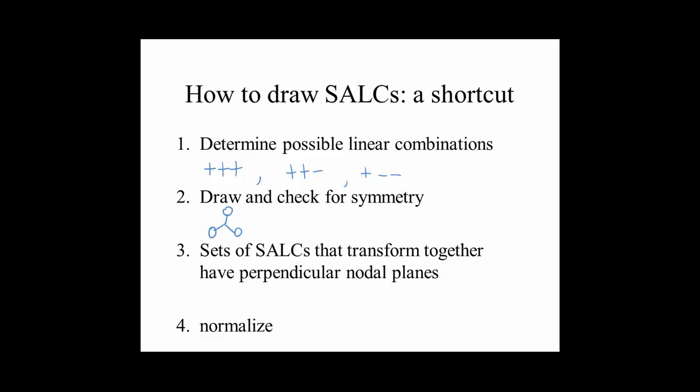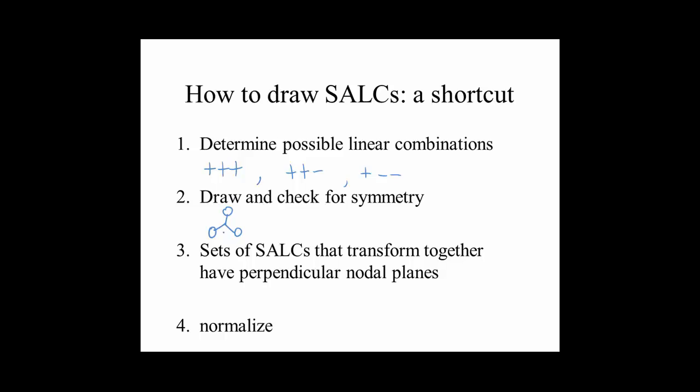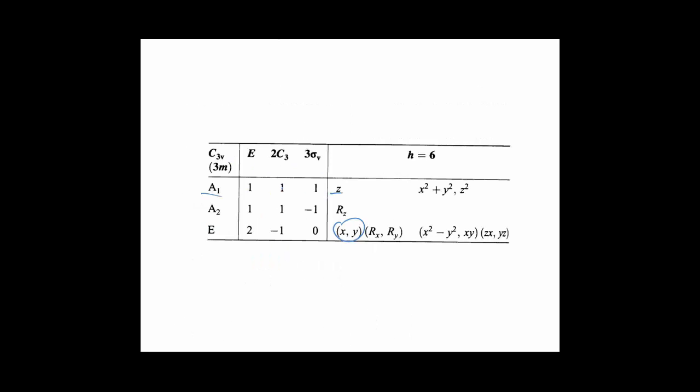Take the positive, positive, positive combination in the C3v point group. Here's the C3 axis. If we rotate along C3, the combination is symmetric — character plus one. The identity gives plus one. A C3 rotation gives plus one. A vertical mirror plane reflects positive to positive, so it's symmetric with respect to all three vertical mirror planes. So this particular linear combination transforms as A1, because it has A1 symmetry characters.